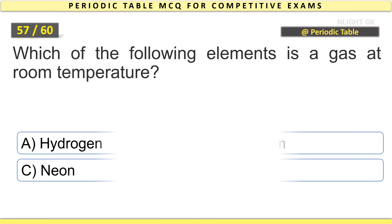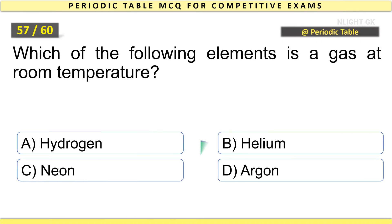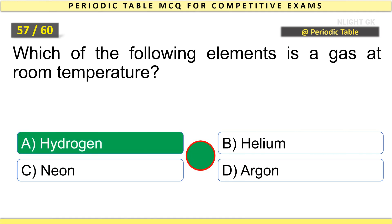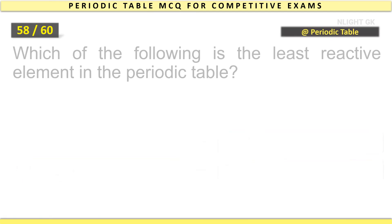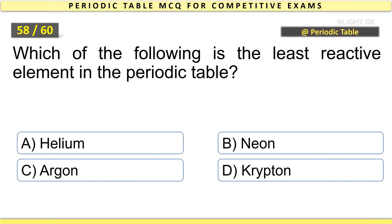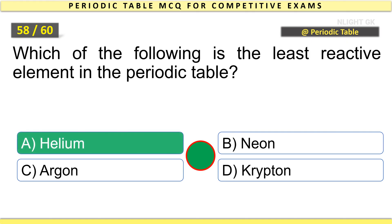Which of the following elements is a gas at room temperature? Hydrogen. Which of the following is the least reactive element in the periodic table? Helium.